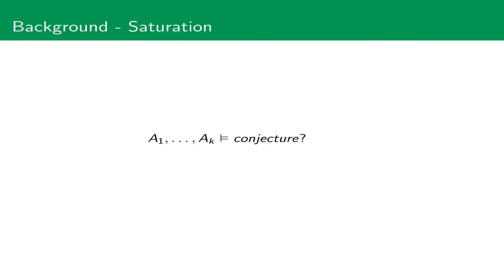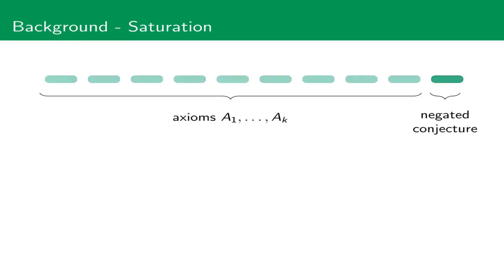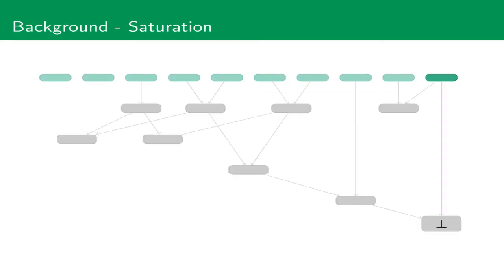Let's now look into how saturation works. Assume you want to prove a conjecture from some axioms A1 to Ak. Throughout this talk, I will visualize these axioms using light green boxes, and I will visualize the negated conjecture as the dark green box. We now iteratively combine the clauses to new clauses, until at some point we hopefully derive the empty clause. Clauses are combined together using a given inference system, which has the important property that as soon as we derive the empty clause, we know that the conjecture follows from the input axioms.